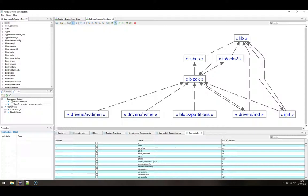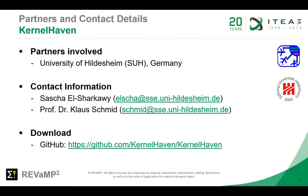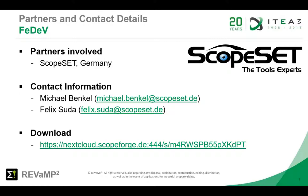Our presentation on reverse-engineering of feature dependencies with KernelHaven and FIDES is now over. You can download bundled versions of KernelHaven, as well as the source code of KernelHaven and its publicly available plugins from our GitHub site. If you have any questions regarding the concepts or the application of KernelHaven, please contact Sascha El-Jarkawi or Klaus Schmidt. The feature dependency visualization tool FIDES, which we used to visualize the results of KernelHaven, was developed by ScopeSet. You can download FIDES from ScopeForge. For questions related to the tool or to the visualization, please contact Michael Benkel or Felix Uda. We hope you enjoyed the presentation. Thank you.